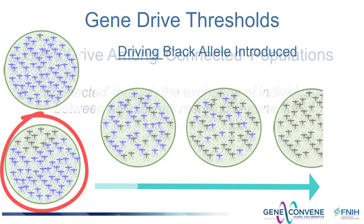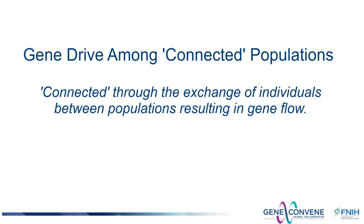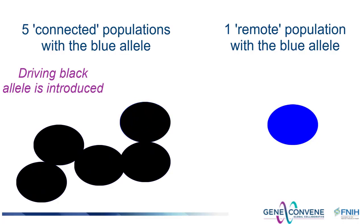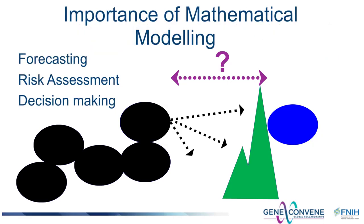We can extend our thinking about spreading by considering multiple populations of the species of interest that are connected in some way and interbreed. Strong, low-threshold drive systems, under some conditions, are predicted to spread through all of the connected interbreeding populations after some period of time. Whether remote populations will acquire the gene drive will depend on many factors — for example, dispersal characteristics of the organism, distance, geography, and many other things. Being able to forecast the fate of gene drive systems following introduction into populations will be an important capability and will depend very much on mathematical models. This is currently a very active area of research.